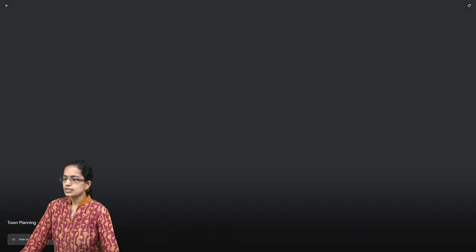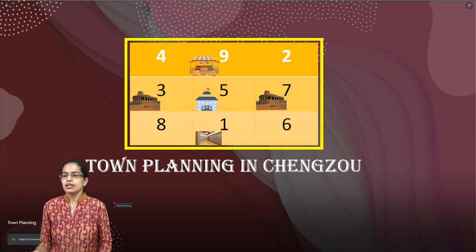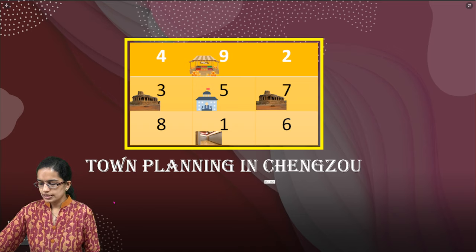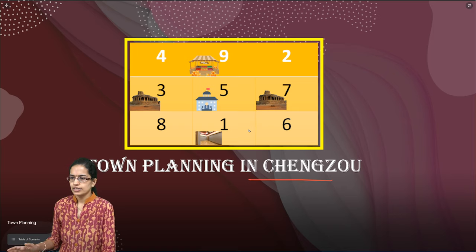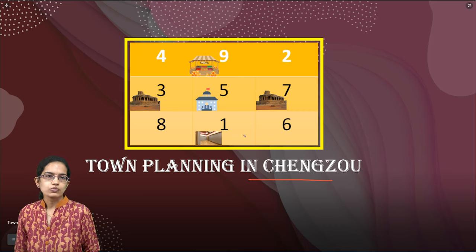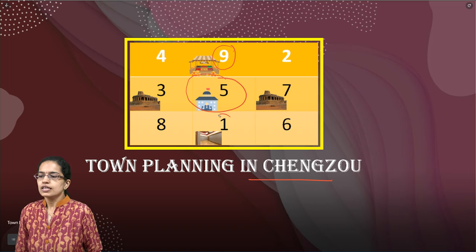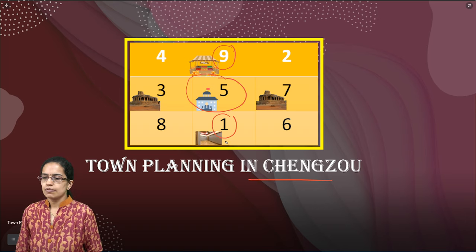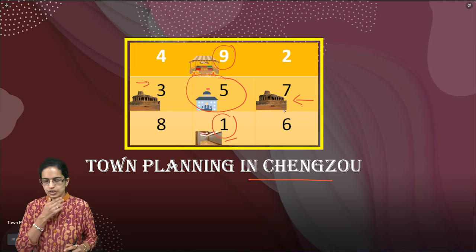Coming on to town planning, it was really interesting. In the city of Shenzhen, the city was divided into nine squares, numbered 4, 9, 2, 3, 5, 7, 8, 1, and 6. The innermost was the region where you had the government buildings and offices. At region 9, you had the farmer's market. In region 1, auditoriums were established. And in regions 3 and 7, you had temples. That was the structure of town planning.